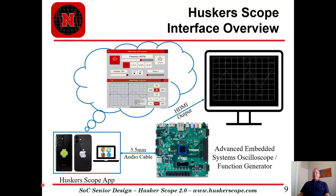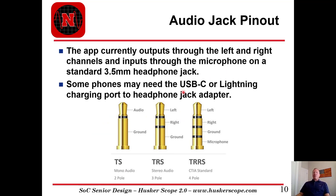This diagram shows the typical configuration for the Huskerscope app interfacing with the advanced embedded systems oscilloscope and function generator through the 3.5 millimeter stereo audio jack cable. Currently, our app outputs through the left and right channels shown in these diagrams, as well as inputting through the microphone for the oscilloscope. Some phones don't have that headphone jack, but can use a USB or lightning charging port headphone jack adapter to connect the system.